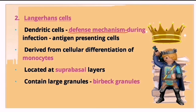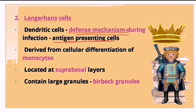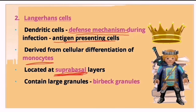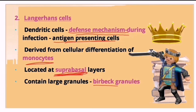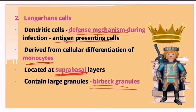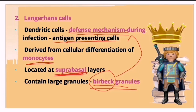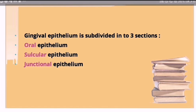Langerhans cells are dendritic cells responsible for the defense mechanism, acting as antigen-presenting cells during infection. They are derived from cellular differentiation of monocytes and are located at the suprabasal layers — unlike melanocytes which are at the basal layer. They contain large granules called Birbeck granules. Merkel cells have a sensory function.